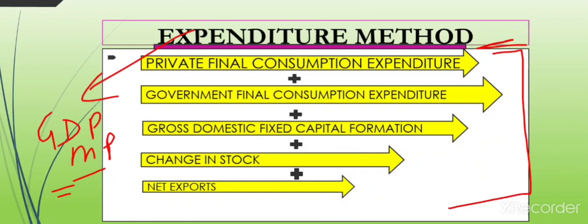The first of the five things to add is Private Final Consumption Expenditure. This covers all expenditure on consumption made by households — that is, all the spending households do to fulfill their wants and needs.